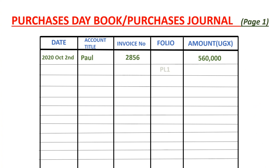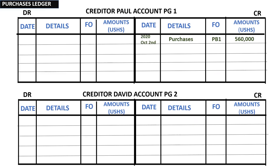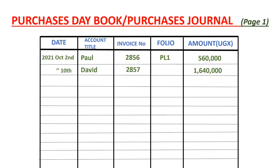Moving on to the next transaction. On the 10th, our supplier was David, who gave us goods worth $1,640,000. We post that date, David as supplier, invoice number 2857, and the amount is $1,640,000. We open up David's account in the purchaser's ledger and credit his account with $1,640,000. The other item affected is purchases in the purchases day book on page one. David's account in the purchaser's ledger is found on purchaser's ledger page two — PL2.